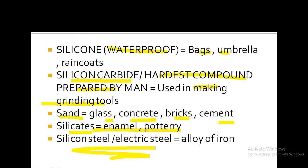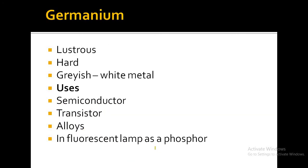The next metalloid is germanium. Germanium is lustrous, meaning it has a shine. It is hard and grayish-white in appearance. It is used as a semiconductor, in transistors, for making different types of alloys, and in fluorescent lamps as a phosphor.